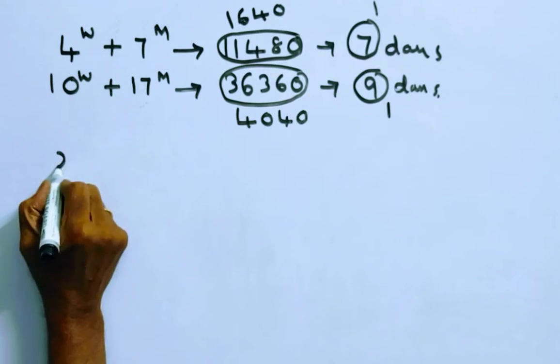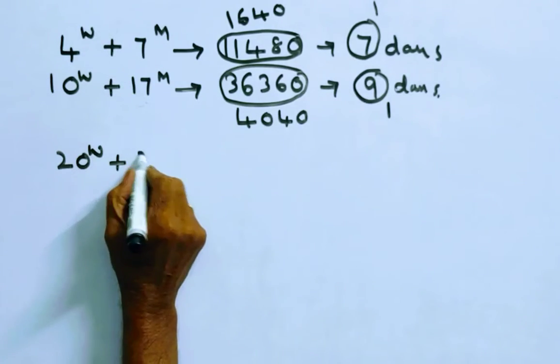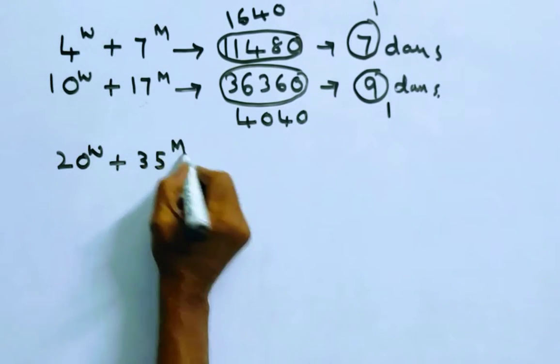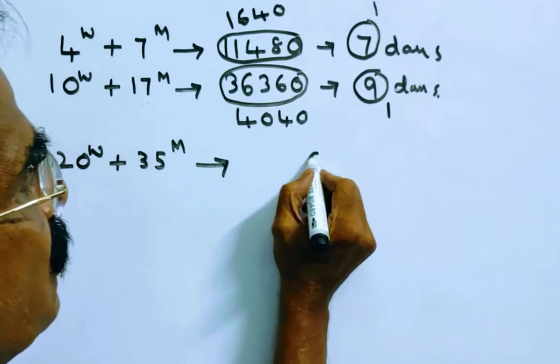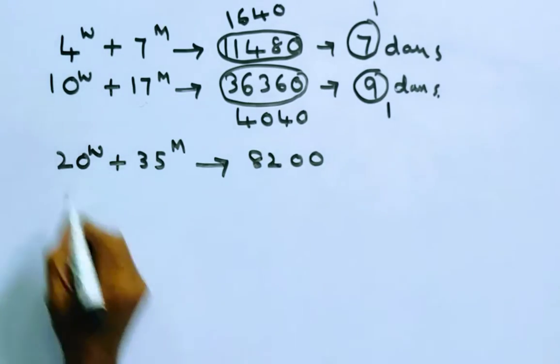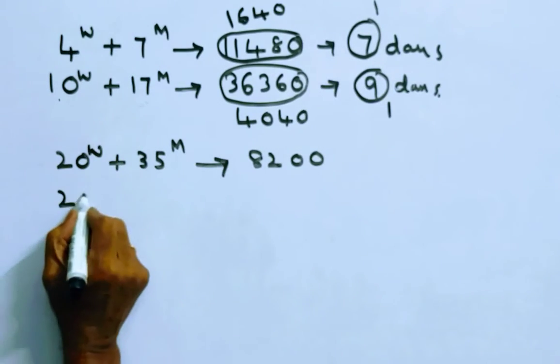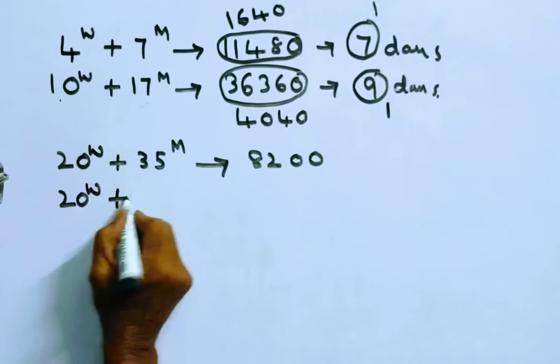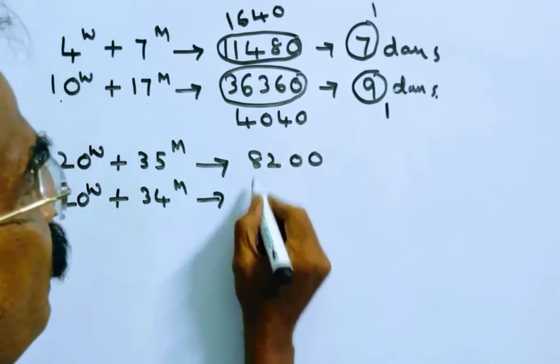Five times four is twenty women, plus five times seven is thirty-five men, can earn five times 1,640 which is 8,200. The same way, let us multiply the second equation by two. Two times ten is twenty women, plus two times seventeen is thirty-four men, can earn two times 4,040 which is 8,080.